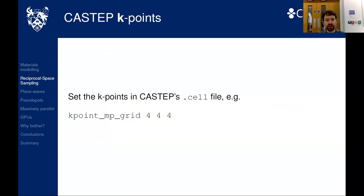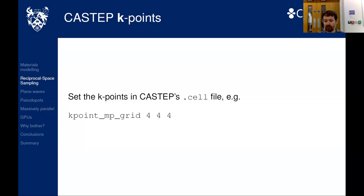You need enough k-points for accurate results. For example, plotting the ground state energy of diamond's primitive cell versus k-point grid density shows convergence. A 4×4×4 grid means 64 sampled phase choices. Crystal symmetries can be used in CASTEP via `symmetry_generate` to reduce the number of k-points. The `kpoint_mp_spacing` keyword specifies the maximum spacing in reciprocal space — note the default unit in CASTEP is 2π/Å.